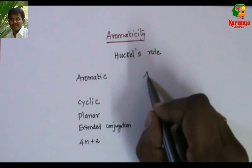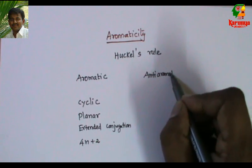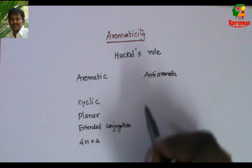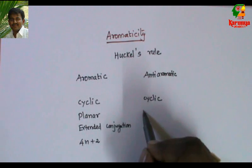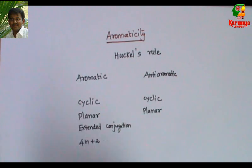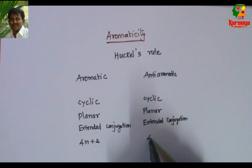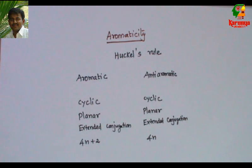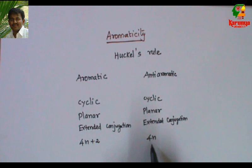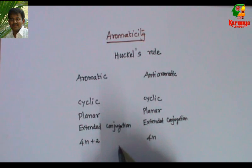A compound is anti-aromatic if it is cyclic, planar, has extended conjugation, and the number of electrons involved in extended conjugation is a multiple of 4. The difference between aromatic and anti-aromatic is only the number of electrons: in anti-aromatic it is 4n electrons, and in aromatic compounds it is 4n + 2 electrons, where n may be 0, 1, 2, and so on.